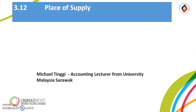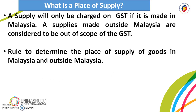First is the place of supply. What is a place of supply? A supply will only be charged on GST if it is made in Malaysia. A supply made outside Malaysia is considered to be out of scope of the GST.